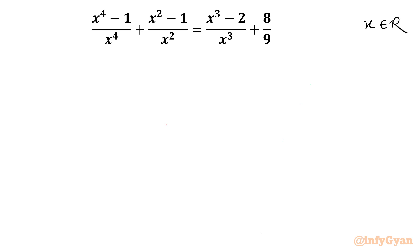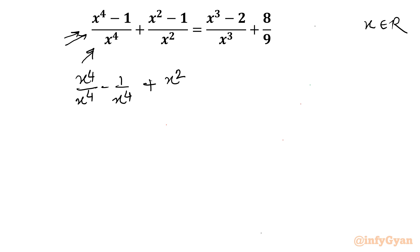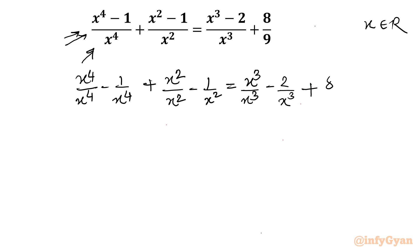Now I will split the numerator with respect to the denominator. As you can see x⁴ is in the denominator and there are two terms in the numerator, so I will write x⁴ over x⁴ minus 1 over x⁴. The next term similarly: x² over x² minus 1 over x². On the right hand side we write x³ over x³ minus 2 over x³, and the last term is unchanged — the constant 8 over 9.